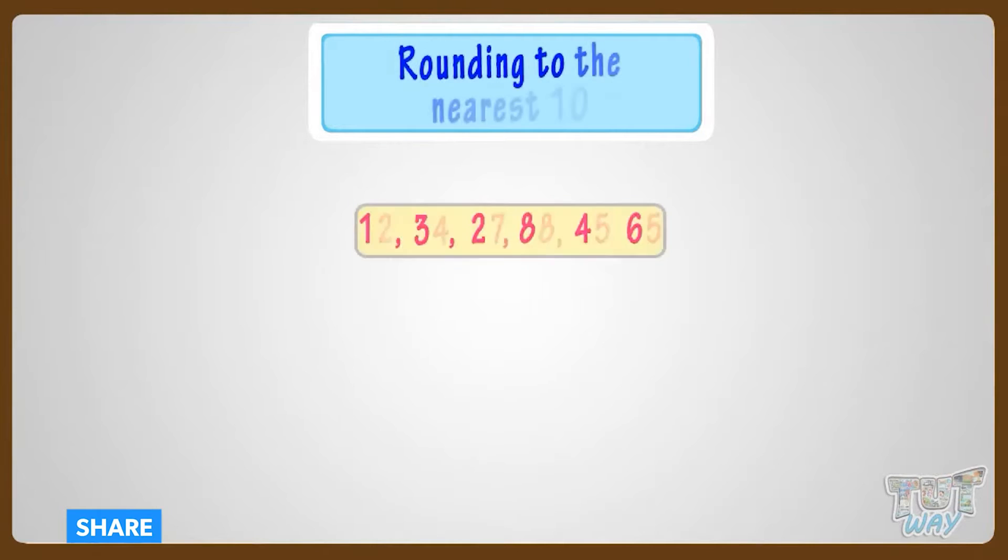Here are a few numbers: 12, 34, 27, 88, 45, 65. We have to round them up to the nearest 10.